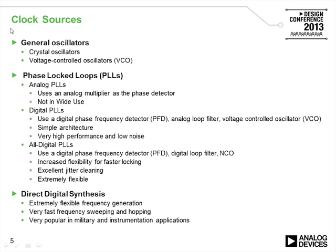What kind of clock sources are available to engineers? Simple oscillators that could be used as clocks include crystal oscillators and voltage controlled oscillators, or VCOs. These would be what we call free running — you apply the power and you get a clock output. In the case of a crystal, the frequency of the clock is determined by the cut of the crystal, so it's a mechanical implementation.